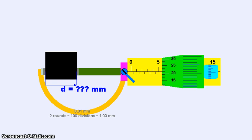On the yellow scale we have divisions on the top and the bottom. The top scales represent 1 mm each whereas the bottom scales represent 0.5 mm.